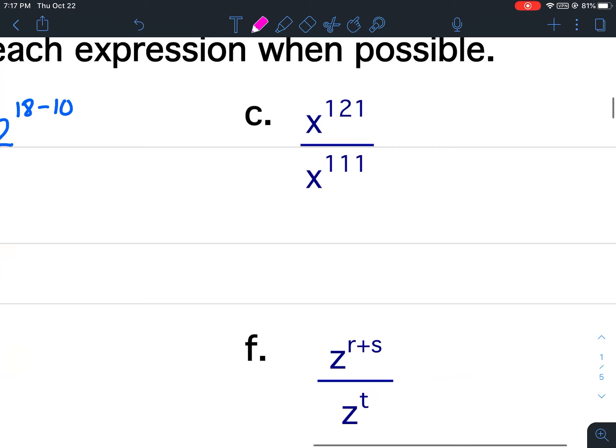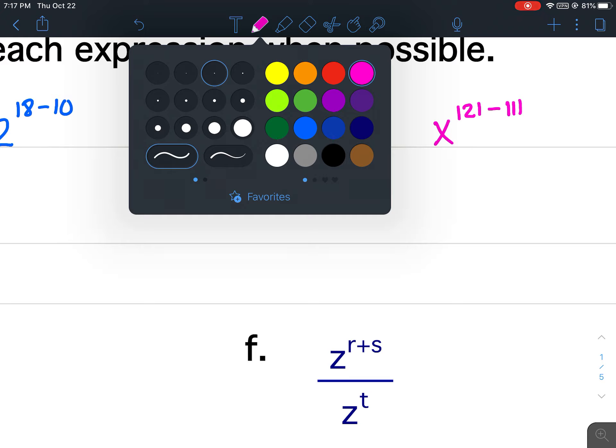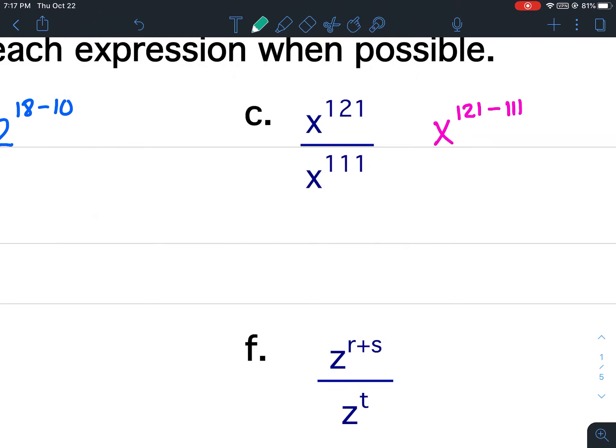For C this would be X to the 121st minus 111. 121 minus 111 is 10. So this would be X to the 10th. Because the base in this case is a variable I can't go any farther and X to the 10th is my final answer.